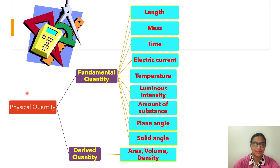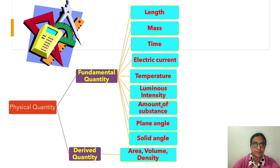Therefore, a new system having seven fundamental units and two supplementary units has been internationally adopted. Physical quantities are classified into fundamental quantities and derived quantities. The seven fundamental units are: length, mass, time, electric current, temperature, luminous intensity, and amount of substance. The two supplementary units are plane angle and solid angle. Derived quantities include area, volume, and density.